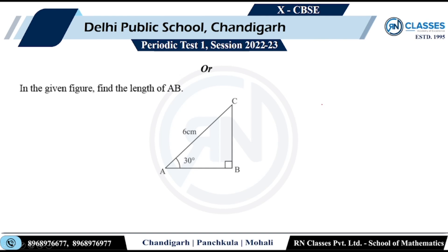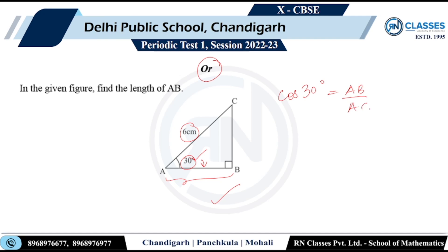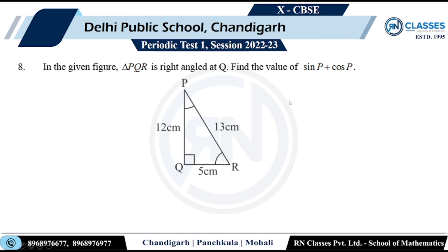Question 8: In the given figure, find the length of AB. This is a right triangle. The angle 30° is given and one side is given. I will use cos 30° because cos = base/hypotenuse. So cos 30° = AB/AC, meaning √3/2 = AB/AC. Therefore AB turns out to be 3, which is the correct answer.